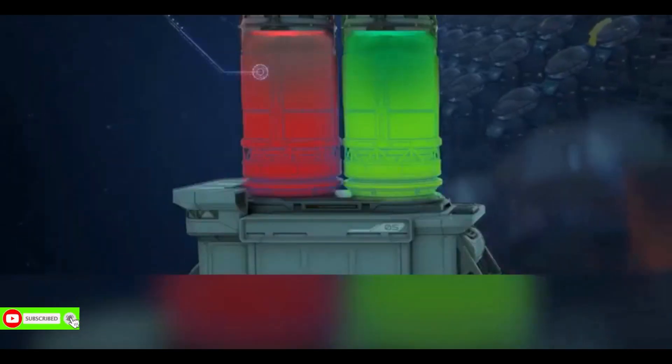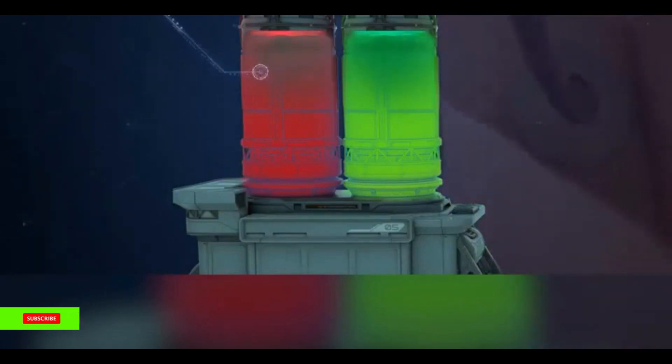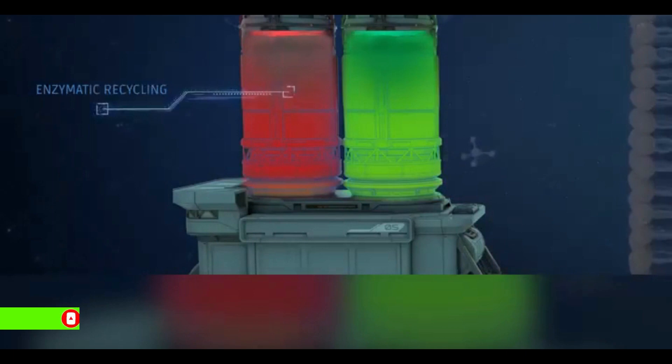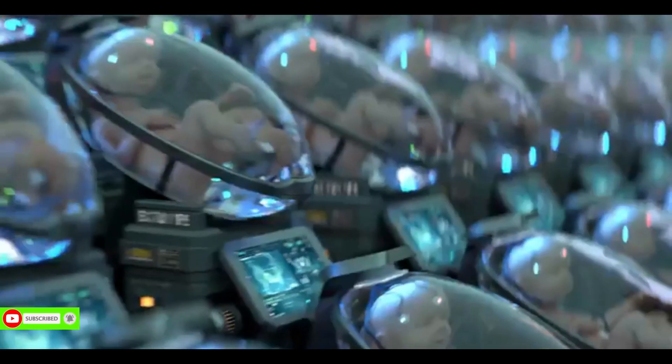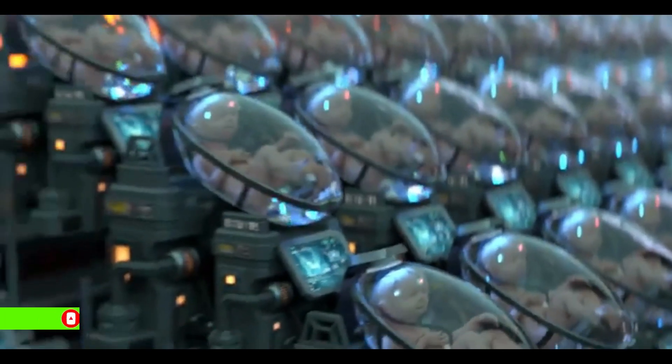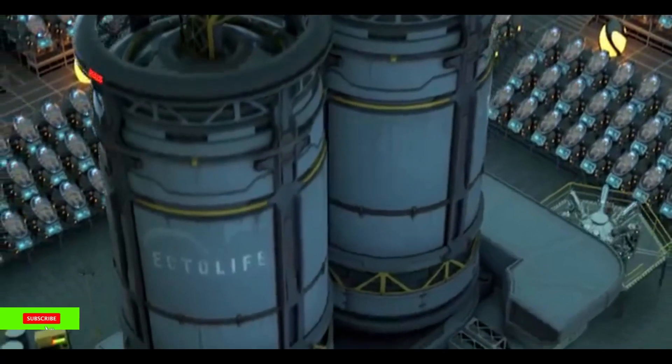The second bioreactor is designed to eliminate any waste products produced by the babies. The artificial umbilical cord helps the babies to release their waste products into the second bioreactor. With the help of a delicate layer of engineered enzymes, the second bioreactor can then recycle waste products and turn them back into useful nutrients. This way, the facility ensures a steady and sustainable supply of fresh nutrients to your baby.